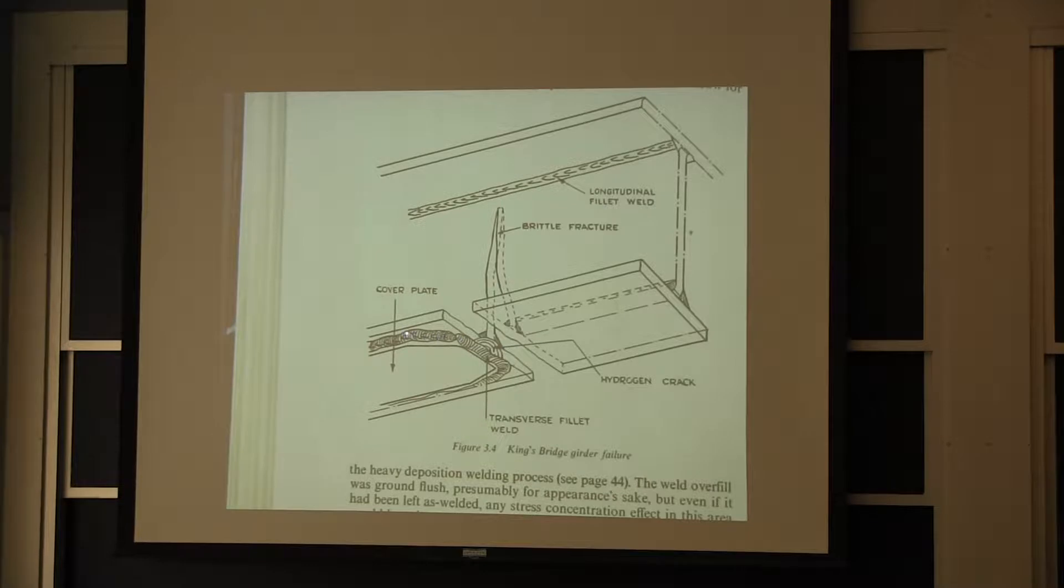You've got two welds on this side. You've got this very stiff, very thick plate. You've got a lot of restraint here. Nothing can bend or bow very much, and they put this weld across here. Well, this weld across here was doing nothing. It wasn't carrying any load.